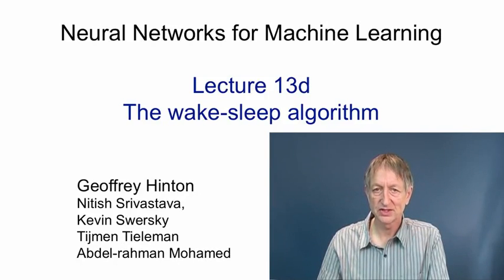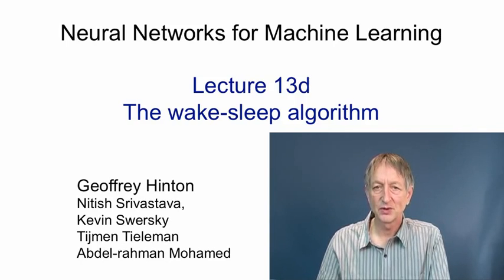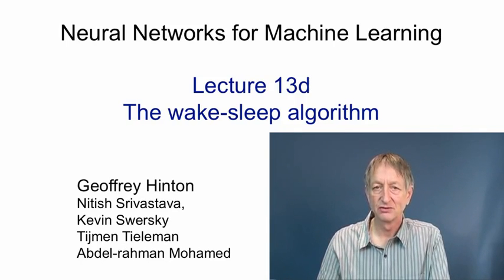I'll describe the first way we discovered for getting sigmoid belief nets to learn efficiently. It's called the wake-sleep algorithm, and it should not be confused with Boltzmann machines. They have two phases, a positive and a negative phase, that could plausibly be related to wake and sleep. But the wake-sleep algorithm is a very different kind of learning, mainly because it's for directed graphical models, like sigmoid belief nets, rather than for undirected graphical models, like Boltzmann machines.